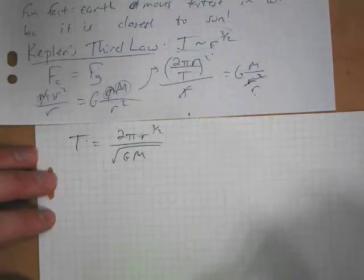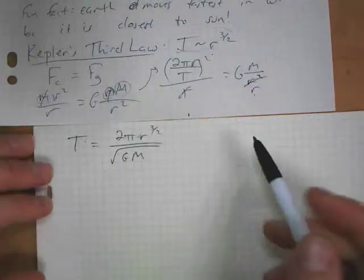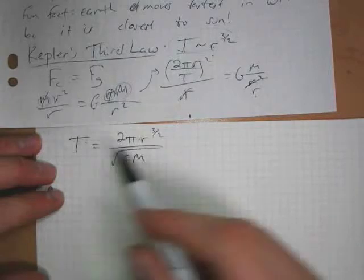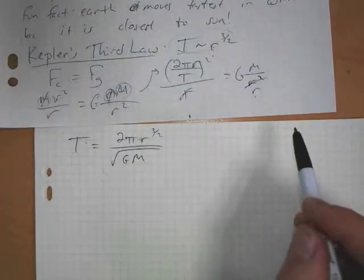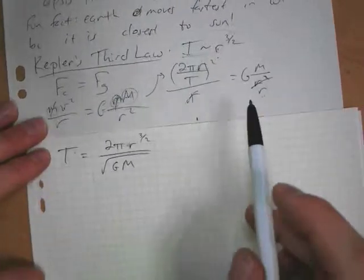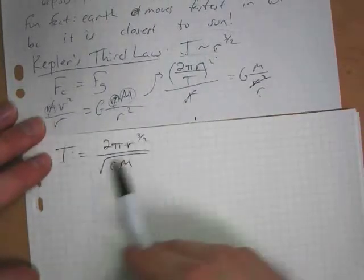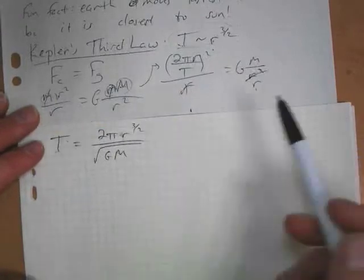all that the period of an orbit depends upon is the radius of said orbit. So, if we want to know, this is essentially what they use to figure out masses of various planets